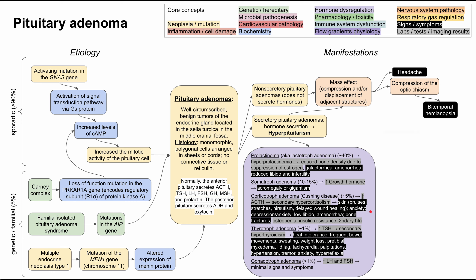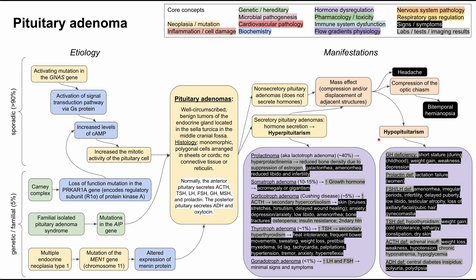To make matters more complicated, if you have mass effect in the sella turcica from a pituitary adenoma — whether non-secretory or secretory — it can compress the other parts of the pituitary and result in hypopituitarism. Essentially, the adenoma is overproducing hormones, taking up space and resources, leading to deficiencies in all the other hormones.